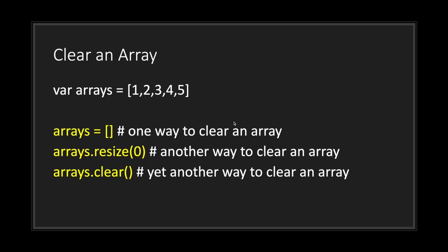Another method you may find yourself using is the clear method. In GDScript there are three ways to clear an array. The first is to assign a new empty array to your existing variable. The second is to use the resize method with a length of zero, which essentially creates an empty array. The third and most intuitive way is to simply call the clear method. All three are viable, but the preferred method is the clear method.